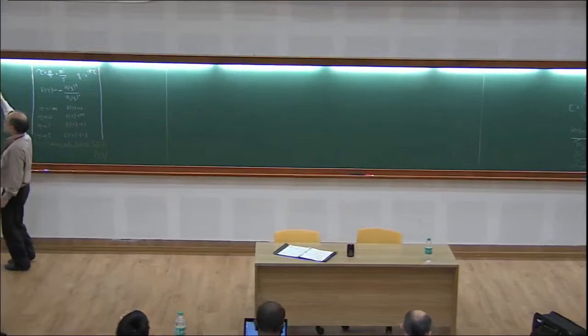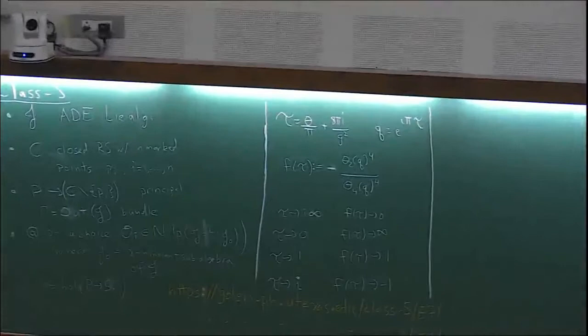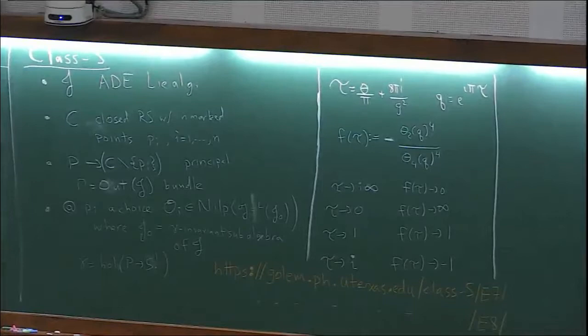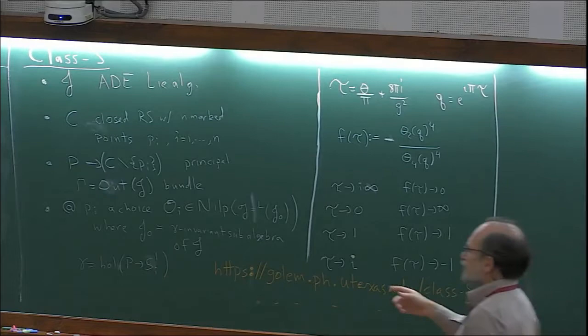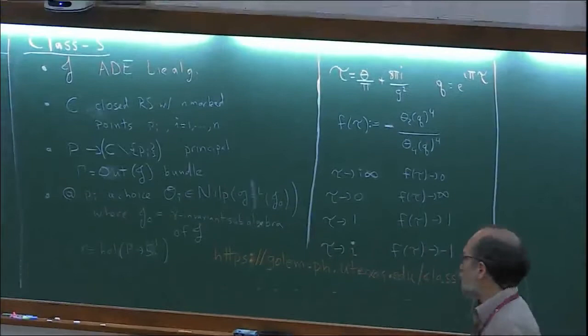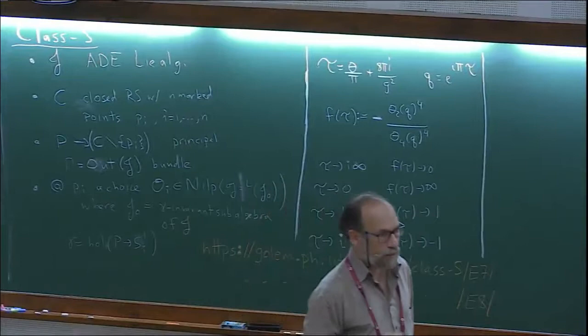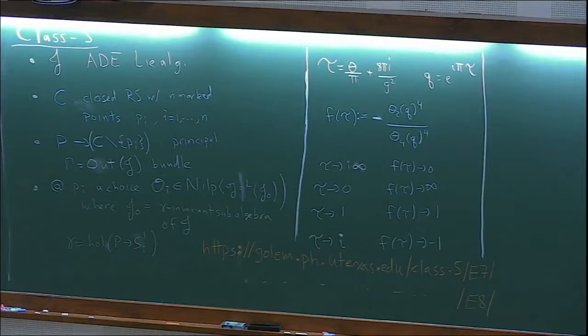The data includes: choice of ADE Lie algebra, which is essentially, as Lottie mentioned in her talk, a choice of two-zero superconformal field theory in six dimensions. And then a Riemann surface C, which we use to compactify that theory down to four dimensions with real co-dimension two defect operators located at points on the Riemann surface. And I want C to be stable, so for low genus there's some minimum number of points.